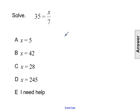So here in the equation 35 equals x divided by 7, the variable is currently not by itself, but rather it's being divided by 7.